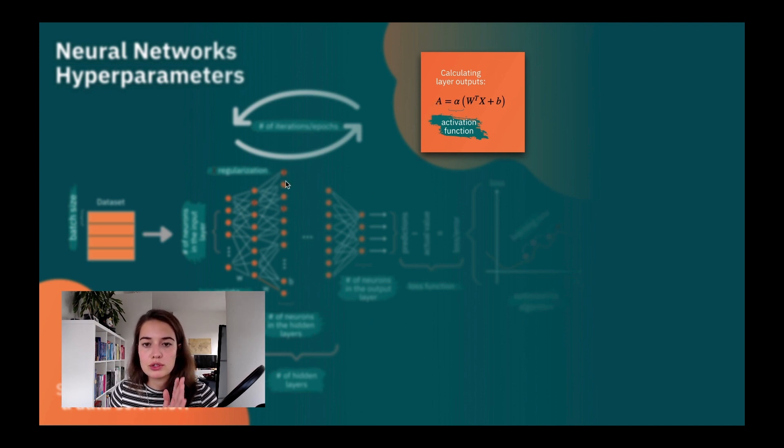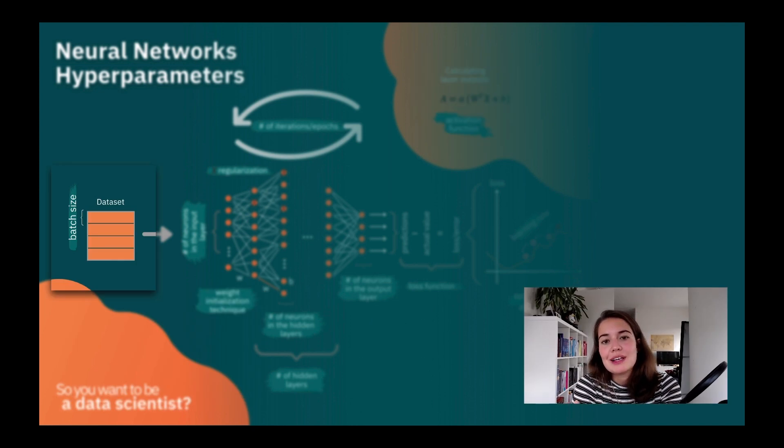Next we have the batch size. Batch size is a thing that tells us how many data points should be in one batch. That effectively tells us how many different groups we should divide the data into.